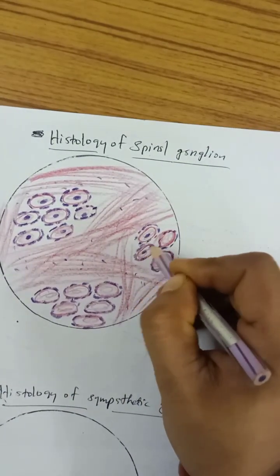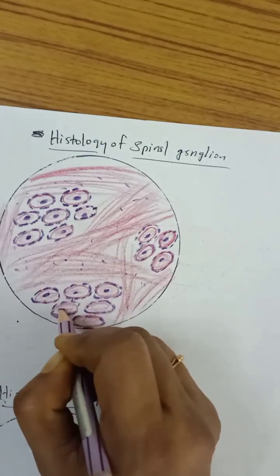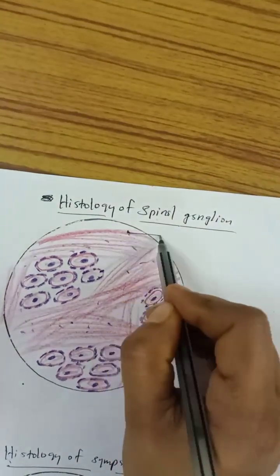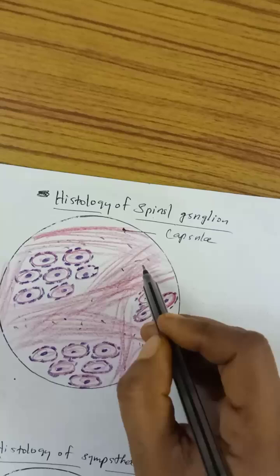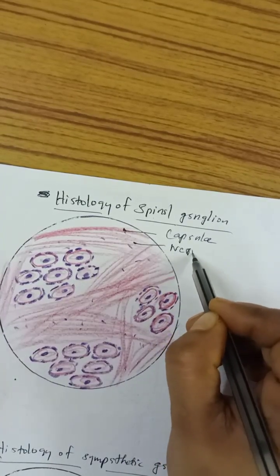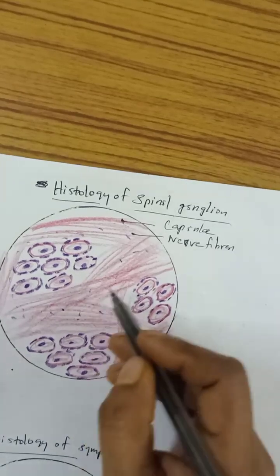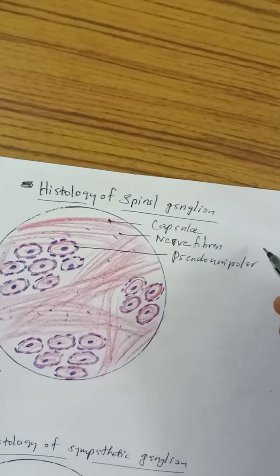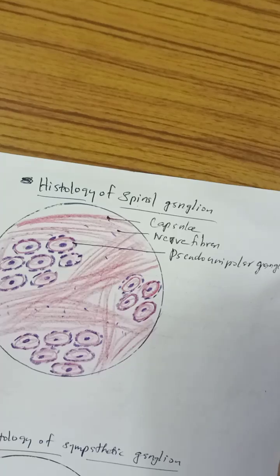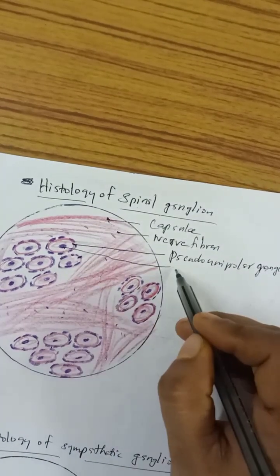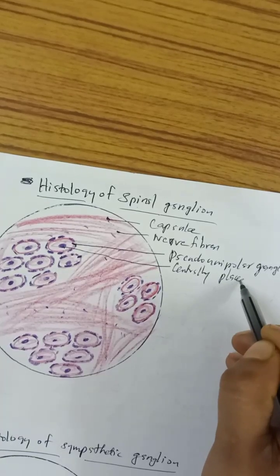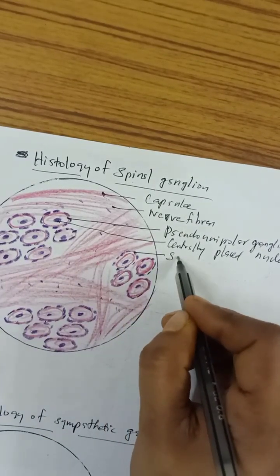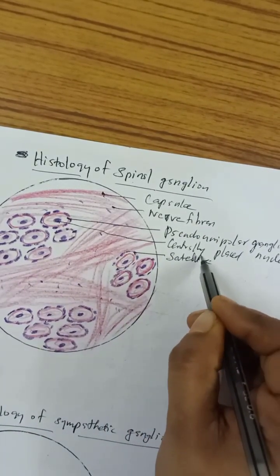So now labeling the spinal ganglion diagram: here is the capsule, here are the nerve fibers, and these are the pseudo-unipolar ganglion cells with their centrally placed nucleus. And there are satellite cells arranged around them — these are the satellite cells.